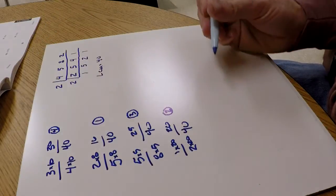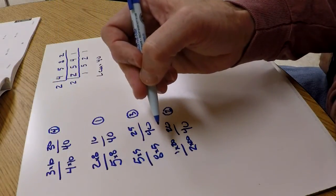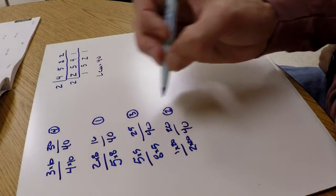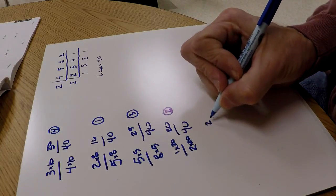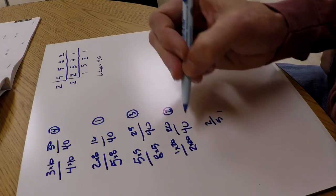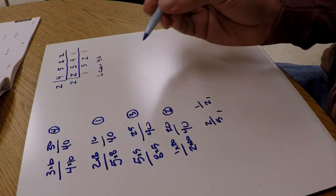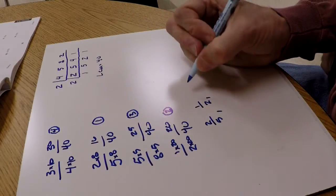So if I were to order these fractions, these original fractions over here, from least to greatest, I would put 2/5, and then I would put 1/2, and then 5/8, and then 3/4.